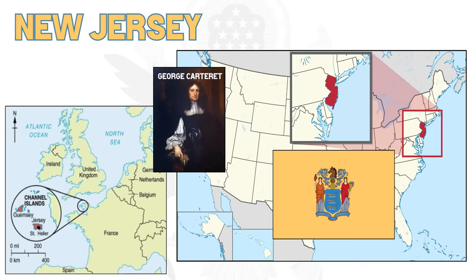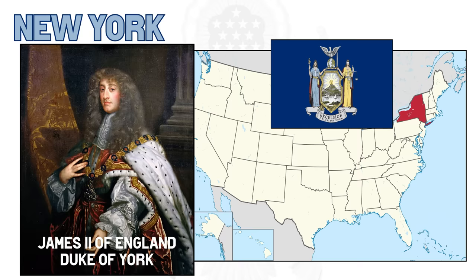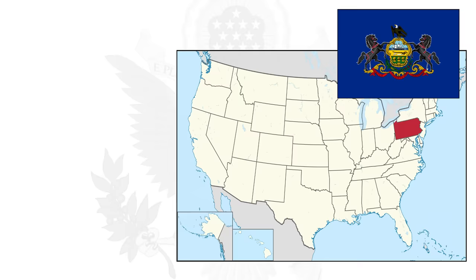However, the state was initially created under the name New Caesarea, because the Roman name of the original Jersey was thought to have been this during the times of the Roman Empire. And New York continues this trend, being named after the then Duke of York — later King James II of England — so both after the English town and its Duke.